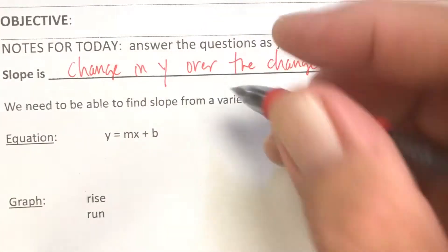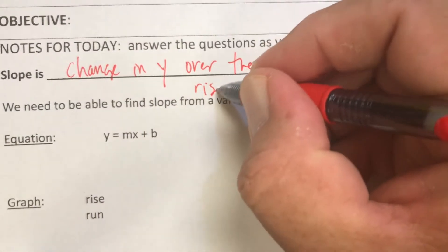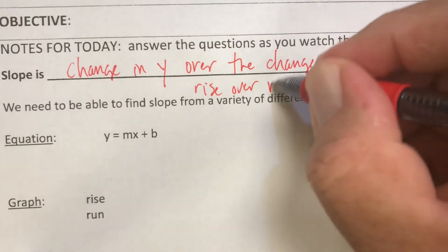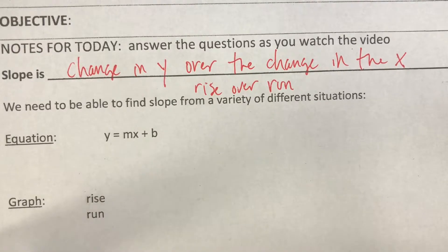You know this better as the rise over run. Rise: how it goes up or down, that's how we change the y number. Run: how it goes from side to side, that's how the x number changes. It's very important that we're able to find the slope from different situations, from different types of representations.